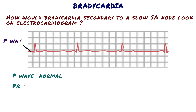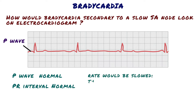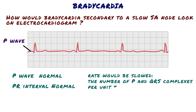How would bradycardia secondary to a slow SA node look on electrocardiogram? The P wave should appear normal, and the PR interval — which indicates the conduction of the impulse — should also appear normal. The difference in sinus bradycardia would be that the rate would be slowed. The number of P and QRS complexes per unit time will be decreased, but they will appear normal in configuration.